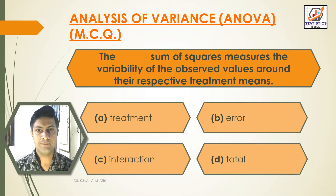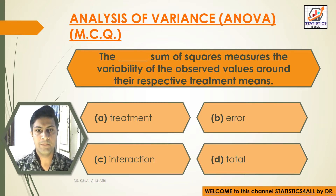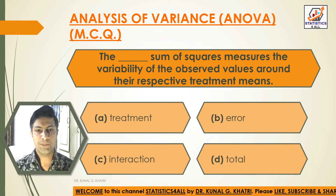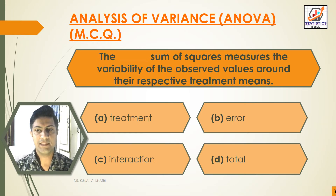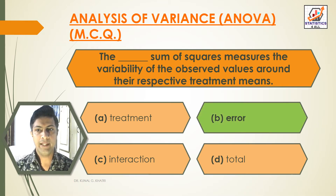Next question: The dash sum of squares measures the variability of the observed values around their respective treatment means. Option A: Treatment. Option B: Error. Option C: Interaction. Option D: Total. Answer: Option B, Error. The error sum of squares measures the variability of the observed values around their respective treatment means.